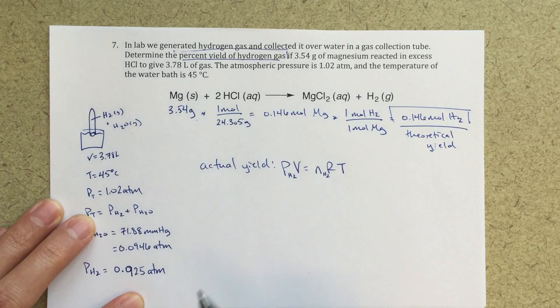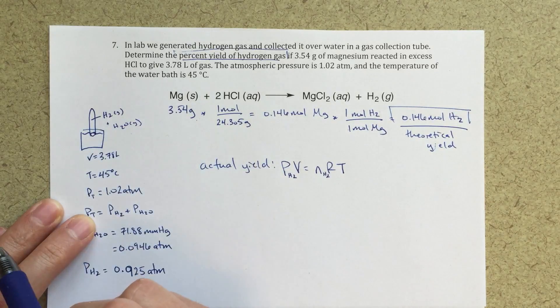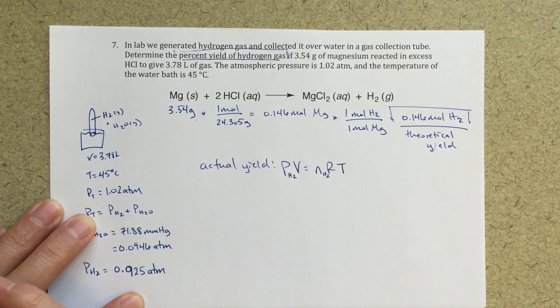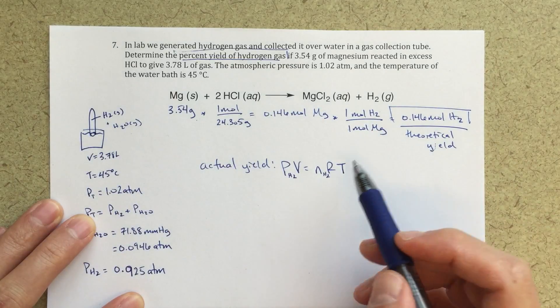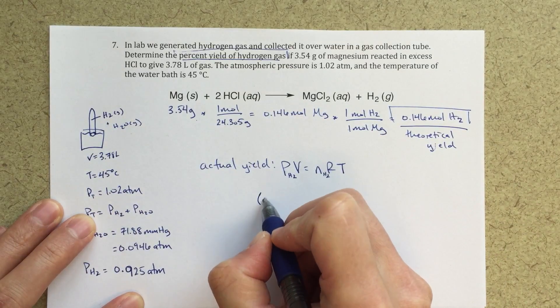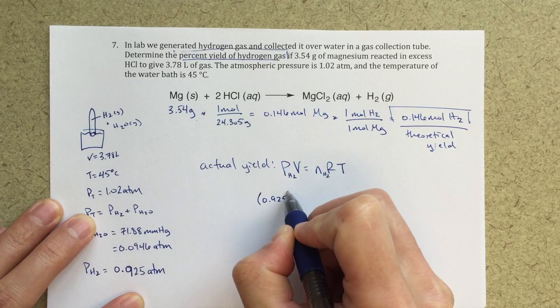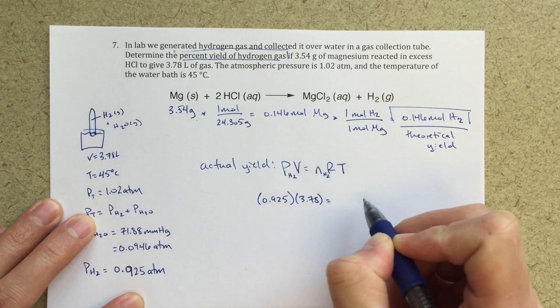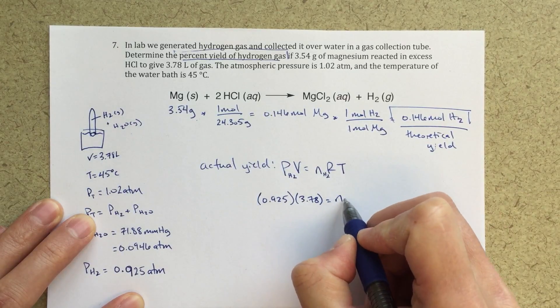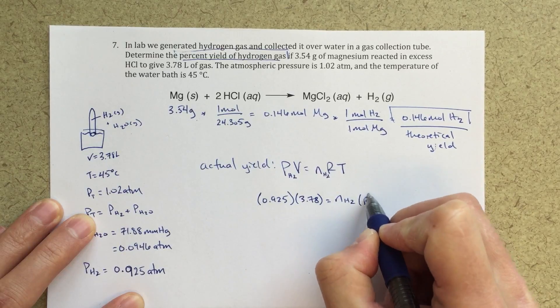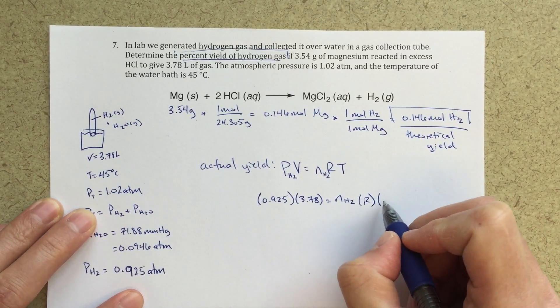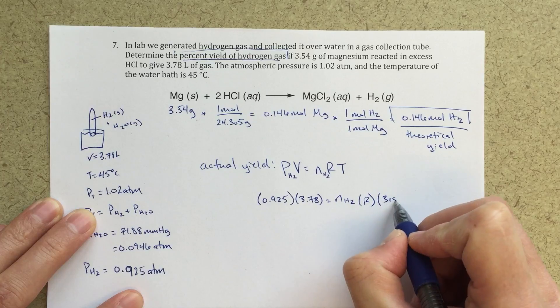Our total pressure up here, it needs to be the partial pressure of hydrogen in that space. Now the volume is still 3.78 liters, right? So I can put in 0.925 atmospheres, 3.78 liters equals my moles of H2 times R 0.08206 and then times my temperature, which will be 318 Kelvin.